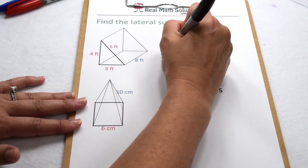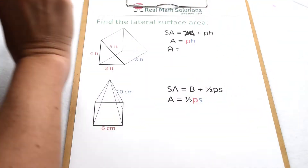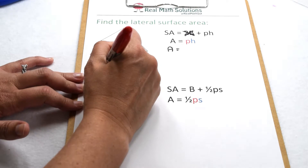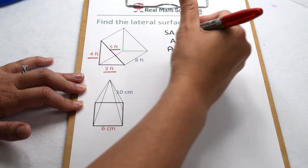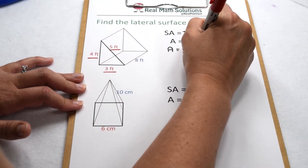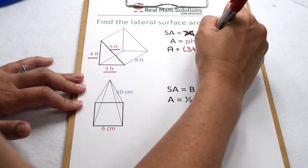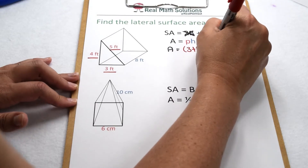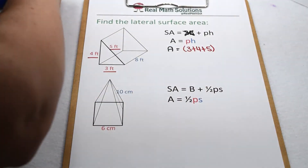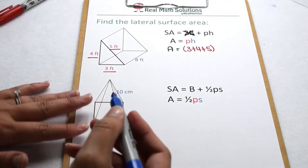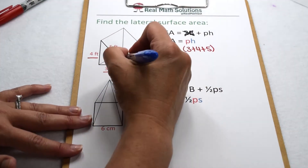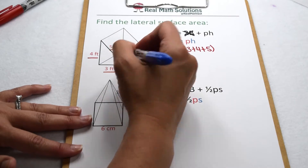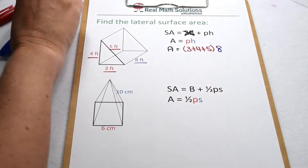To start with, we need to find the perimeter of our base. On our triangular prism, that's going to be the 3, 4, and 5. So we would need to add 3 plus 4 plus 5. Then we need to multiply that by the height of the prism. The height of the prism is the distance between the bases, so that's our 8 feet.